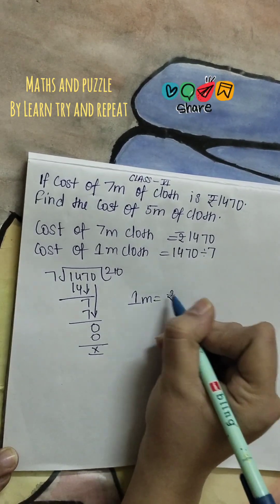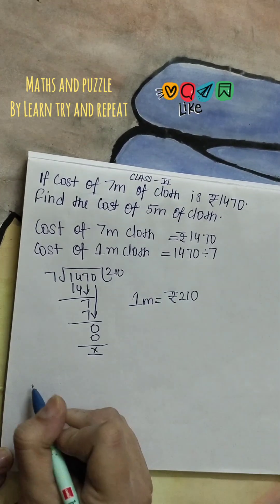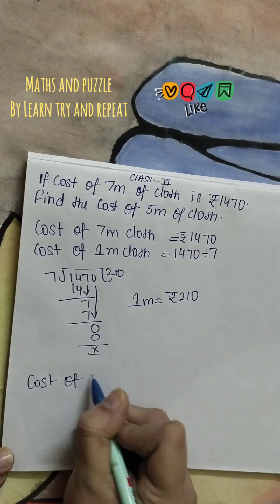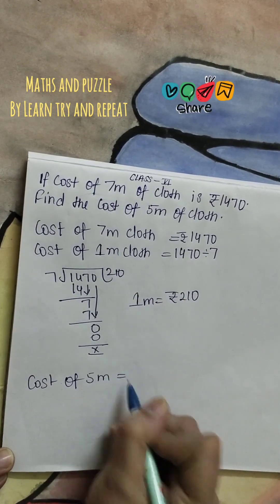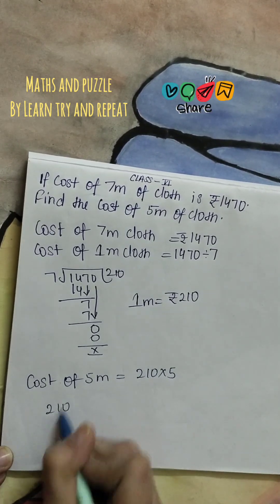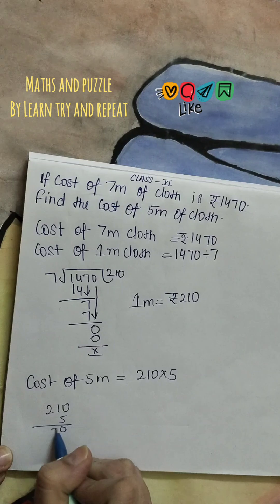Now our next step is cost of 5 meters cloth. Cost of 5 meters will be 210 into 5. 210 into 5 is 1050.